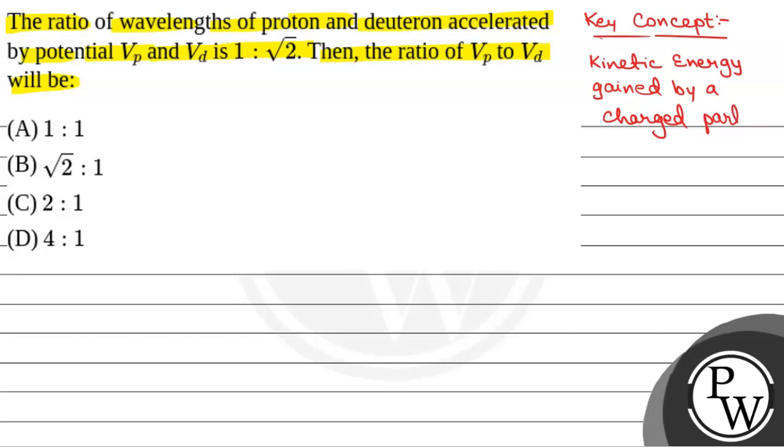Accelerated through a potential difference of V, accelerated by a potential V is given by K is equal to Q into V. Where Q is the charge on the particle and V is the potential difference.